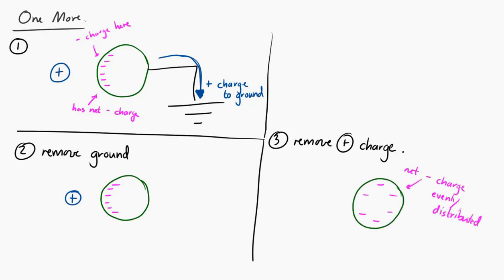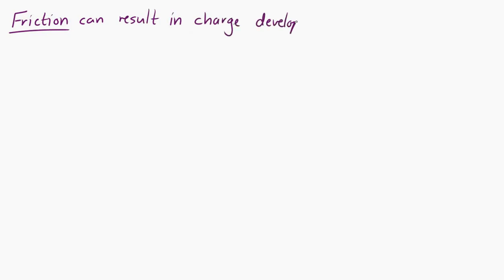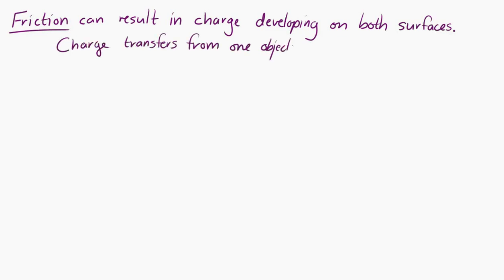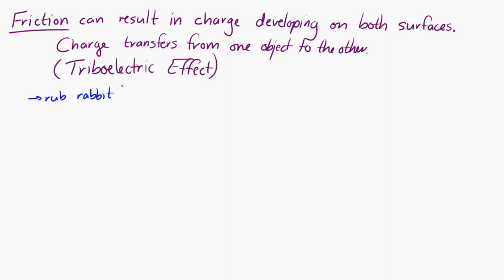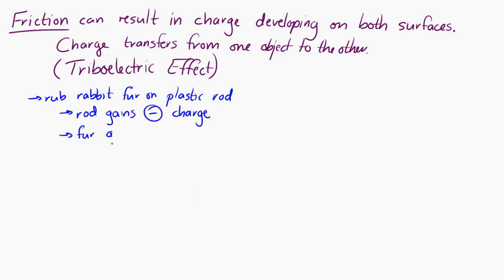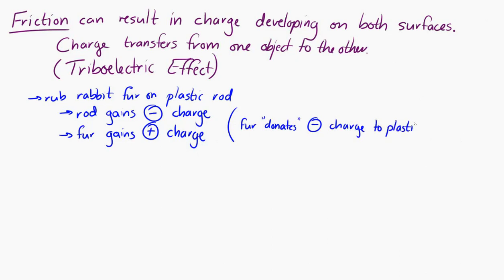Another way that charge can be transferred between objects is by friction. Friction between objects can sometimes result in charge being transferred from one object to the other — this is called the triboelectric effect. For example, if you rub rabbit fur on a plastic rod, the plastic rod will gain a negative charge and the fur will develop a positive charge, because the fur donates negative charge to the plastic due to friction.